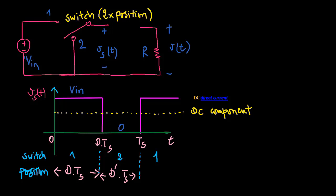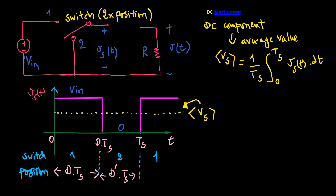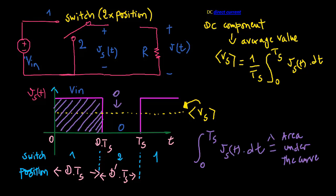From Fourier analysis, we know that the DC component of VS is given by its average value. The integral is given by the area under the curve, or D times TS times VN. This is therefore the average value.